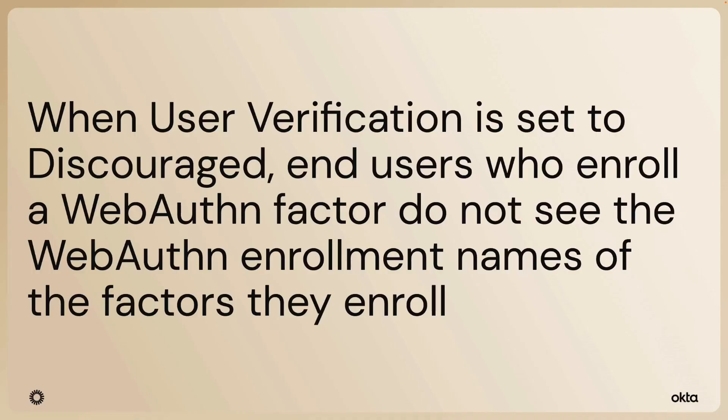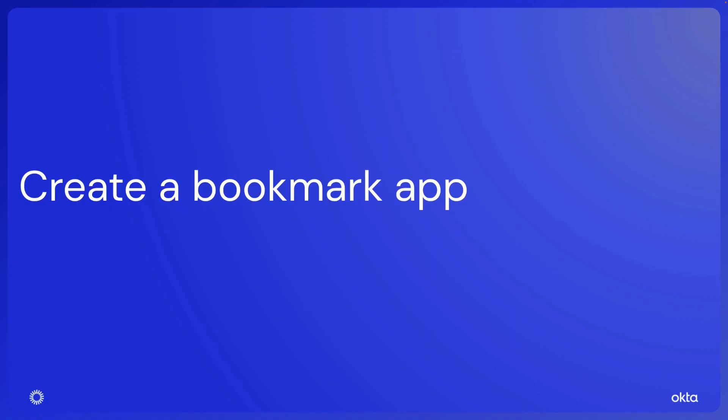When you configure your org with user verification set to Discourage, end users who enroll a WebAuthn factor do not see the enrollment names of the factors they enroll. They're listed generically as 'Authenticator,' with no other details about the factor provided. Now let's create a Bookmark app.